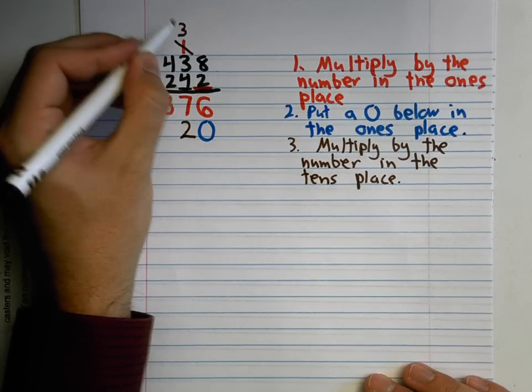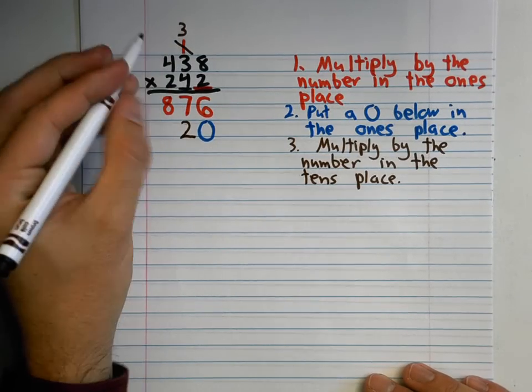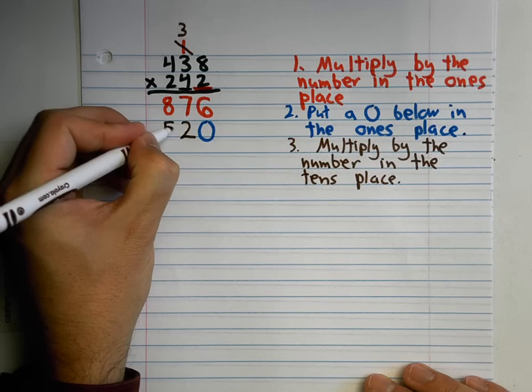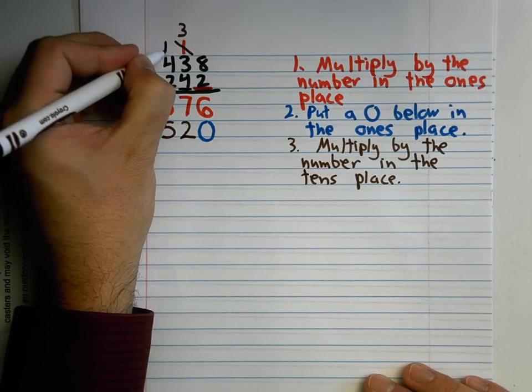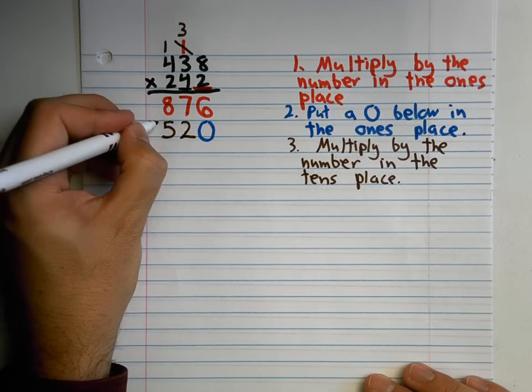4 times 3 is 12 plus 3 is 15. Put my 5 right here, my 1 up here. 4 times 4 is 16 plus 1 is 17.